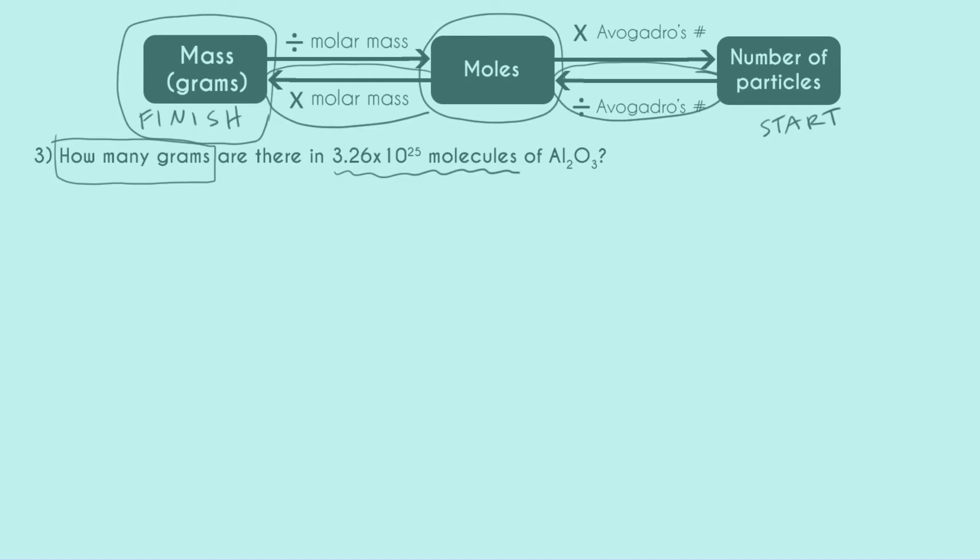All right, so step one is just to divide my number of particles by Avogadro's number. And so instead of setting it up like division, I'm going to set it up by multiplying by the reciprocal of Avogadro's number. So that means that 6.02 times 10 to the 23 goes down here. And for our units, that gets flipped as well. So we have molecules down here and moles up here. Now I can see a little bit more clearly how my canceling out works. Molecules cancels, I'm going to end up in moles. And I end up with 54.153 mole Al2O3.